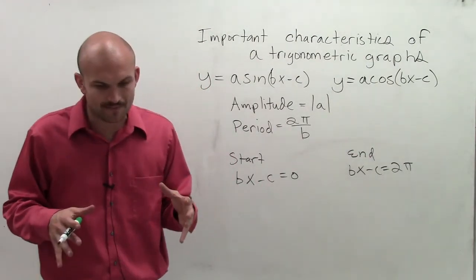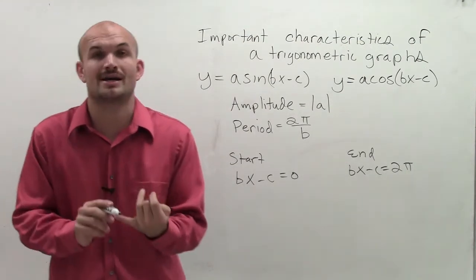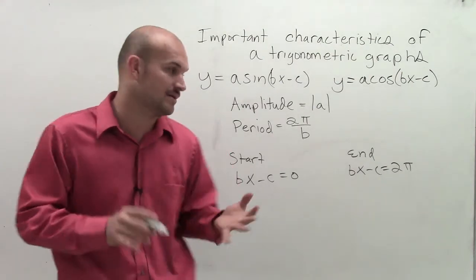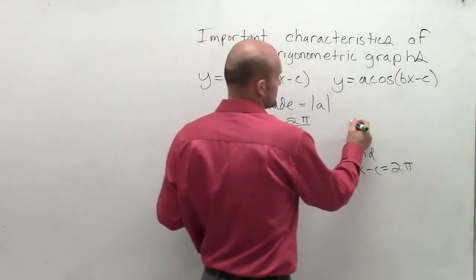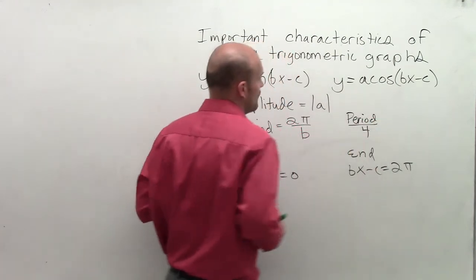And the last thing I'm going to leave you with is, if you remember, whenever we found our period, there were four important points. We had our intercepts and our maximums and our minimums. So what I like to do is I always like to take the period and divide it by four.